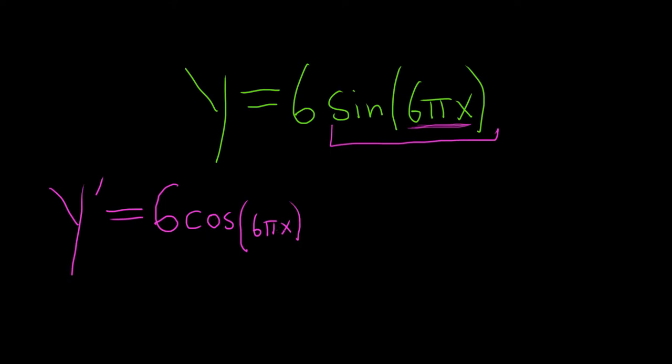So the derivative of sine is cosine, and now you focus on the inside piece. So times the derivative of 6 pi x. Well, the derivative of x is 1, so we're just left with 6 pi. And that's it.